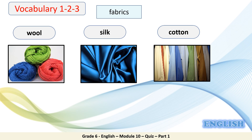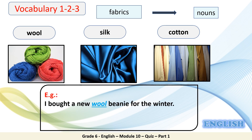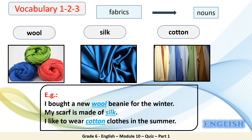Can you guess the part of speech of these words? Are they a verb, a noun, or an adjective? That's right — they are all nouns. Now I'd like for you guys to try and put these three words in sentences. For example: I bought a new wool beanie for the winter. My scarf is made of silk. I like to wear cotton clothes in the summer.